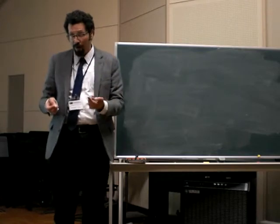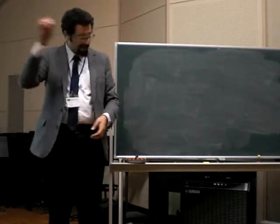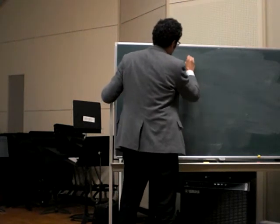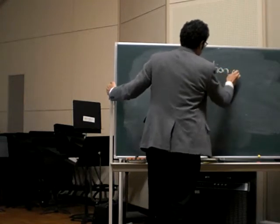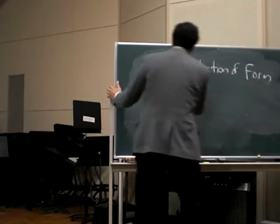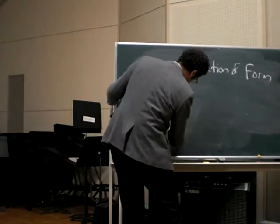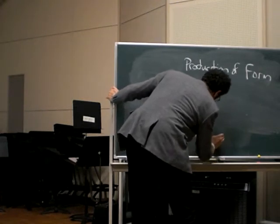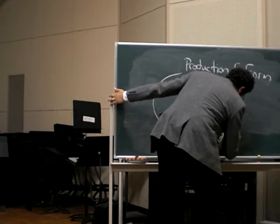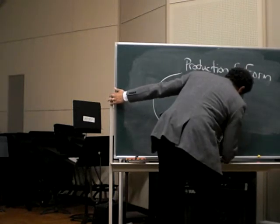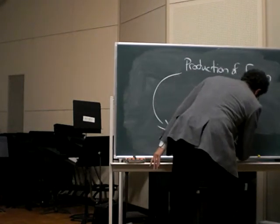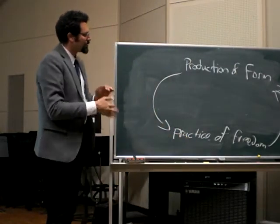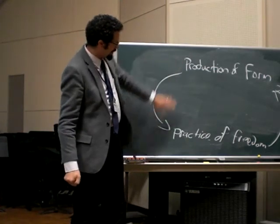And that's a dialectic, a model where, in fact, there's a kind of constant feedback between two things. These probably aren't the right words for this. I'm still trying to think about exactly how to conceptualize this, but what I say here is production of form and the practice of freedom.